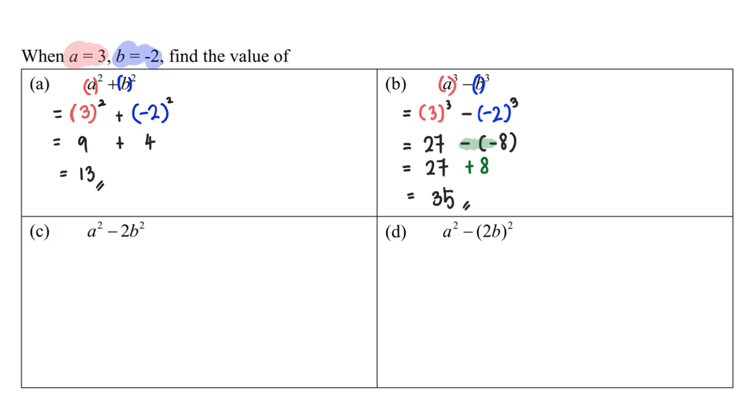Let's continue to part (c), where again I'm going to remind myself to put brackets. Same goes for everyone. This will be a squared minus 2 times b, which is negative 2, squared.